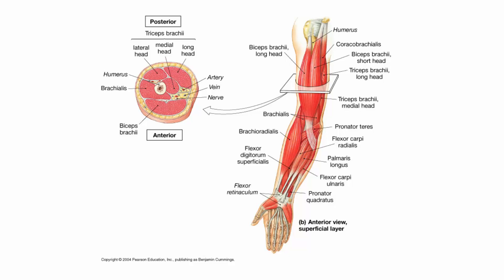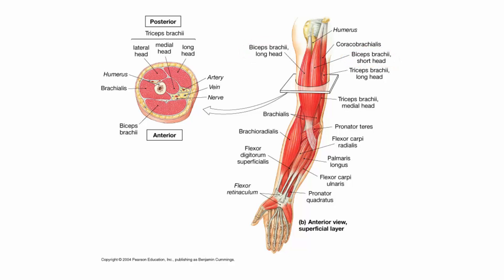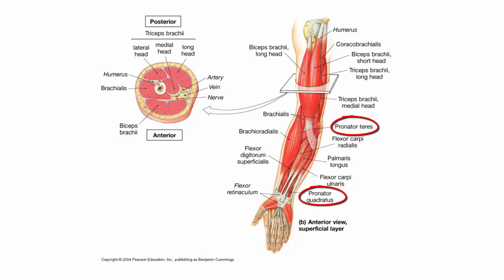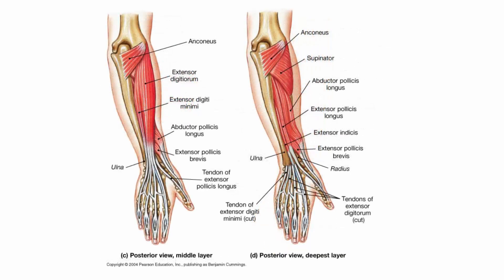Let's take a look at some of these muscles. The biceps brachii causes flexion of the arm and forearm, and it supinates. The brachialis also causes flexion of the forearm. The brachioradialis flexes the forearm as well. The pronator teres and pronator quadratus pronate the forearm and wrist. Here is the supinator — and of course, it supinates. The anconeus muscle helps extend the arm.